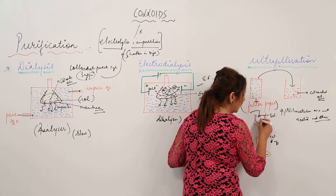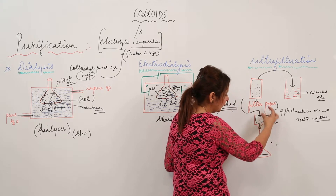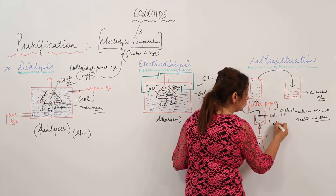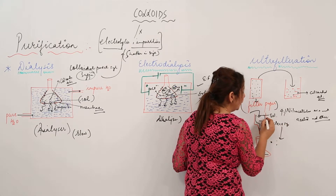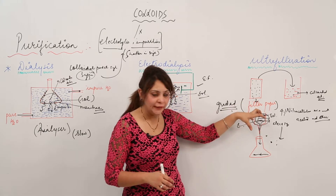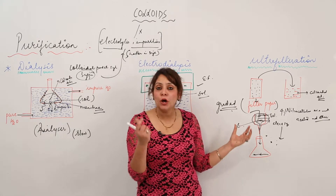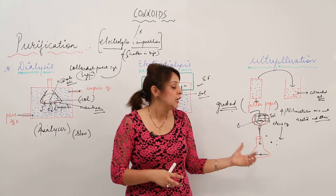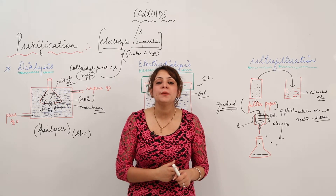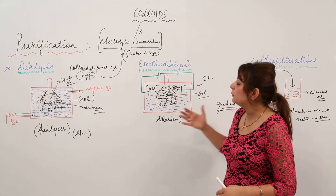We place this graded filter paper in a funnel and pour the colloidal sol. The pore size is adjusted so that it allows the electrolytes and impurities — which are smaller — to pass through, but the colloidal particles cannot pass through, so they are left in the funnel. We can also apply pressure to speed up the process. The smaller-size particles like electrolytes and impurities pass through the graded filter paper, leaving behind the pure colloidal solution.